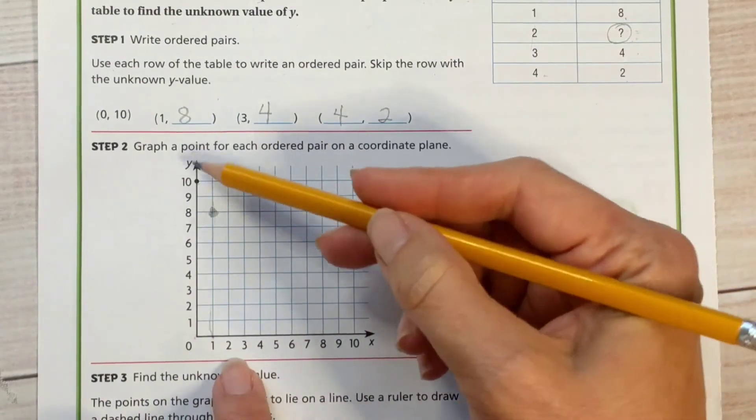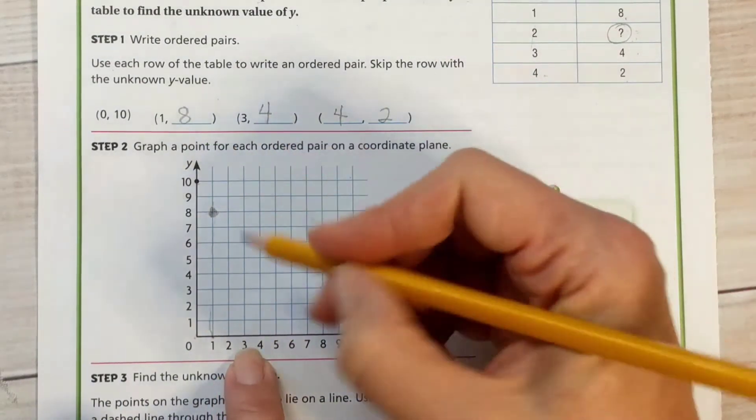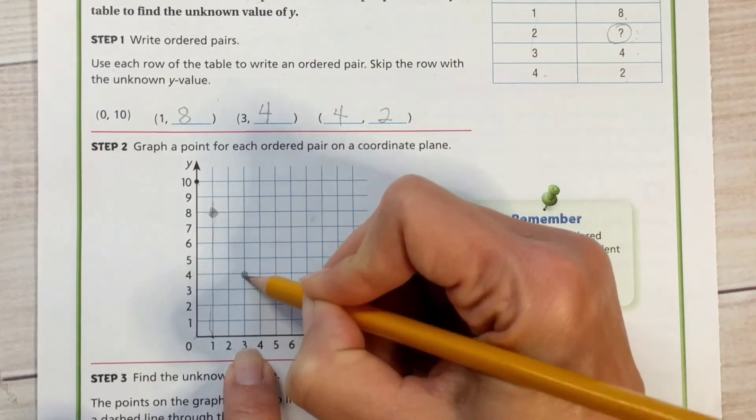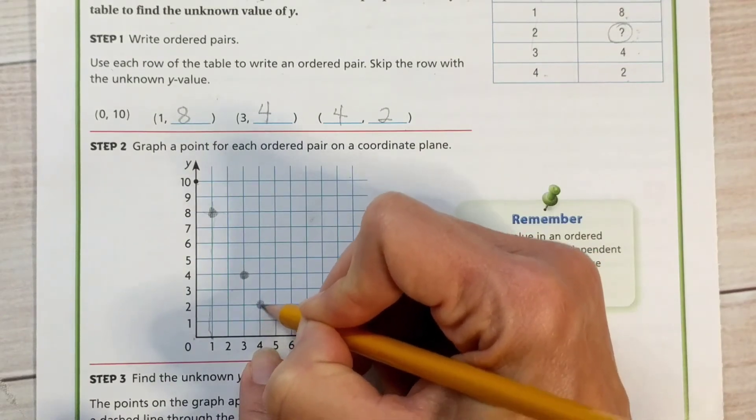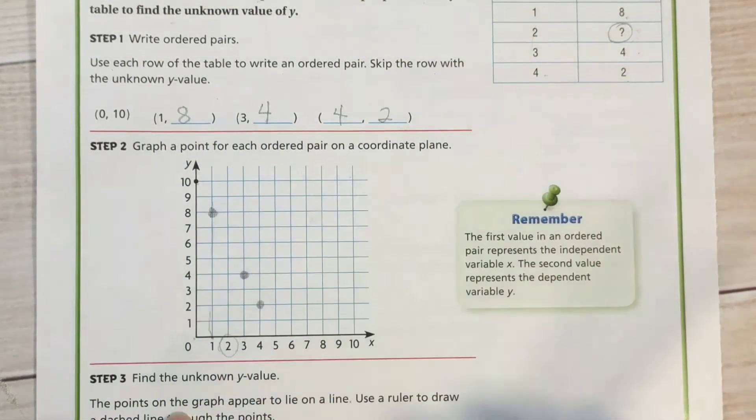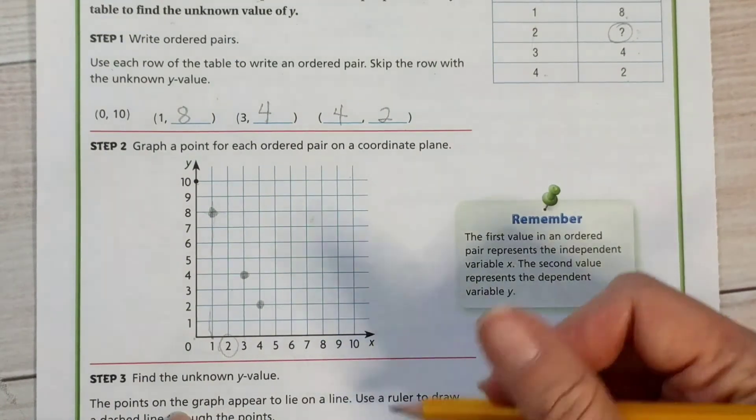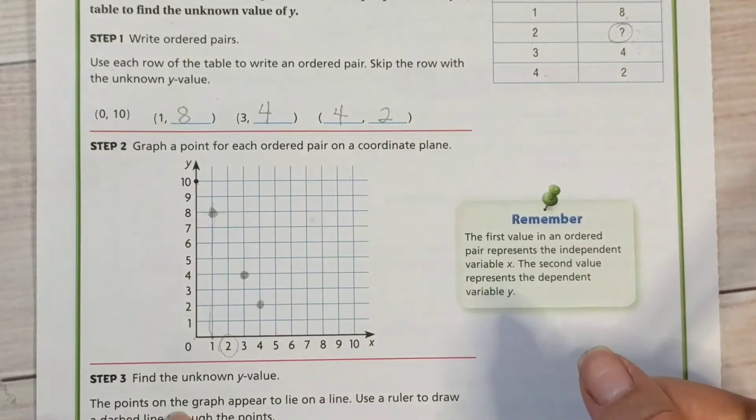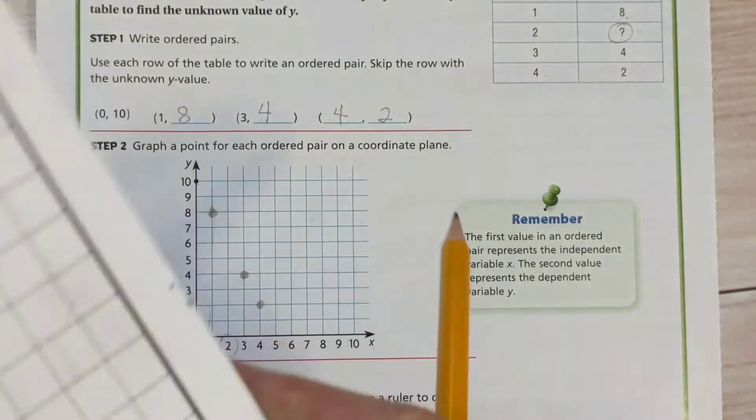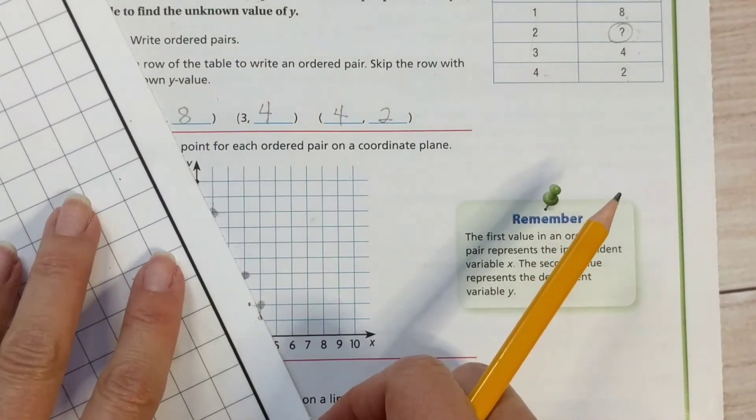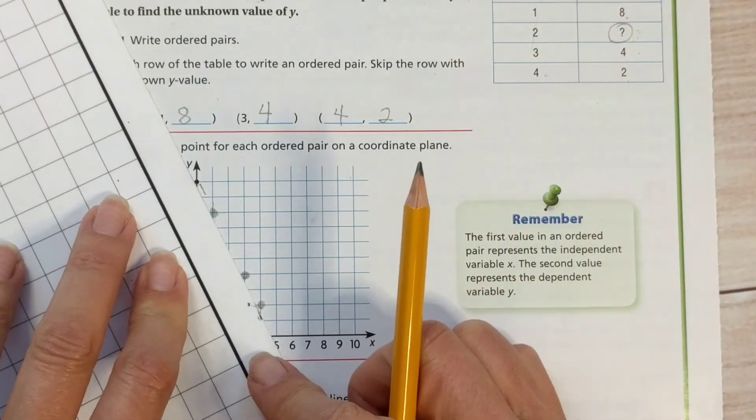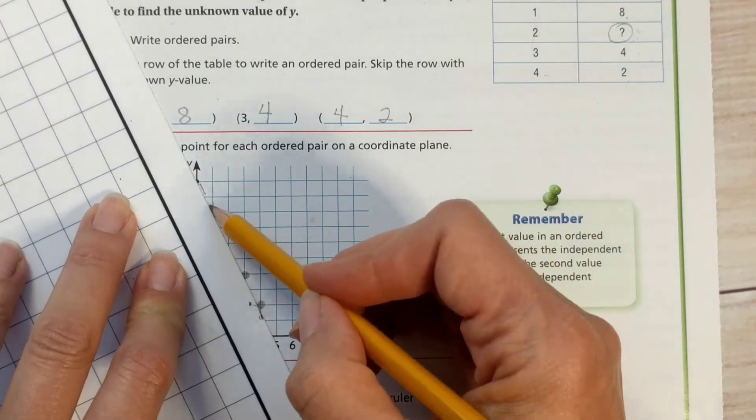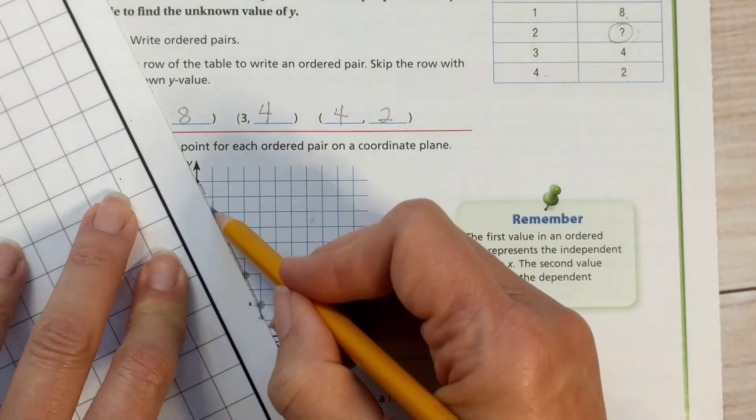Alright, here we go. We have now 3, 4, and we have 4, 2. Now what we don't know is this one. And we can figure that out now using our graph. What we're going to do is use a straight edge. We're going to borrow this. Make a straight edge and line up the dots like that. Draw a line. Got to make sure it's straight. Draw a line through them all the way from the 10.